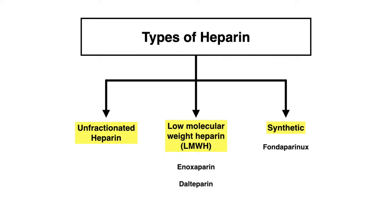Before we get started, let's talk about the different types of heparin. The word heparin is really an umbrella term that refers to different types, so it can be a little confusing when people just use the word. Heparin can refer to one of three forms: unfractionated heparin, low molecular weight heparin — which includes enoxaparin and dalteparin — as well as fondaparinux, which is actually more of a synthetic heparinoid but is often lumped under heparin, so we'll include it here as well.